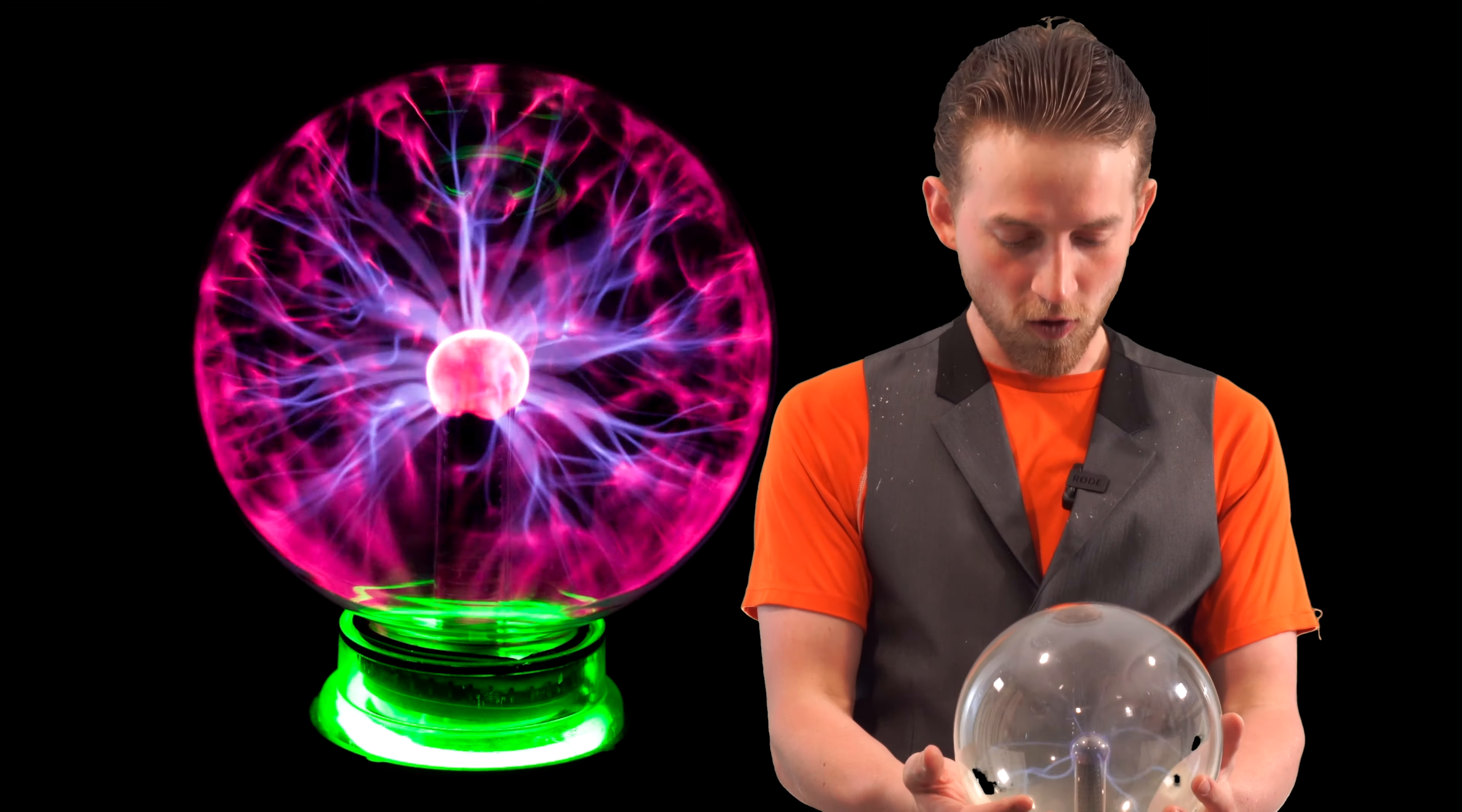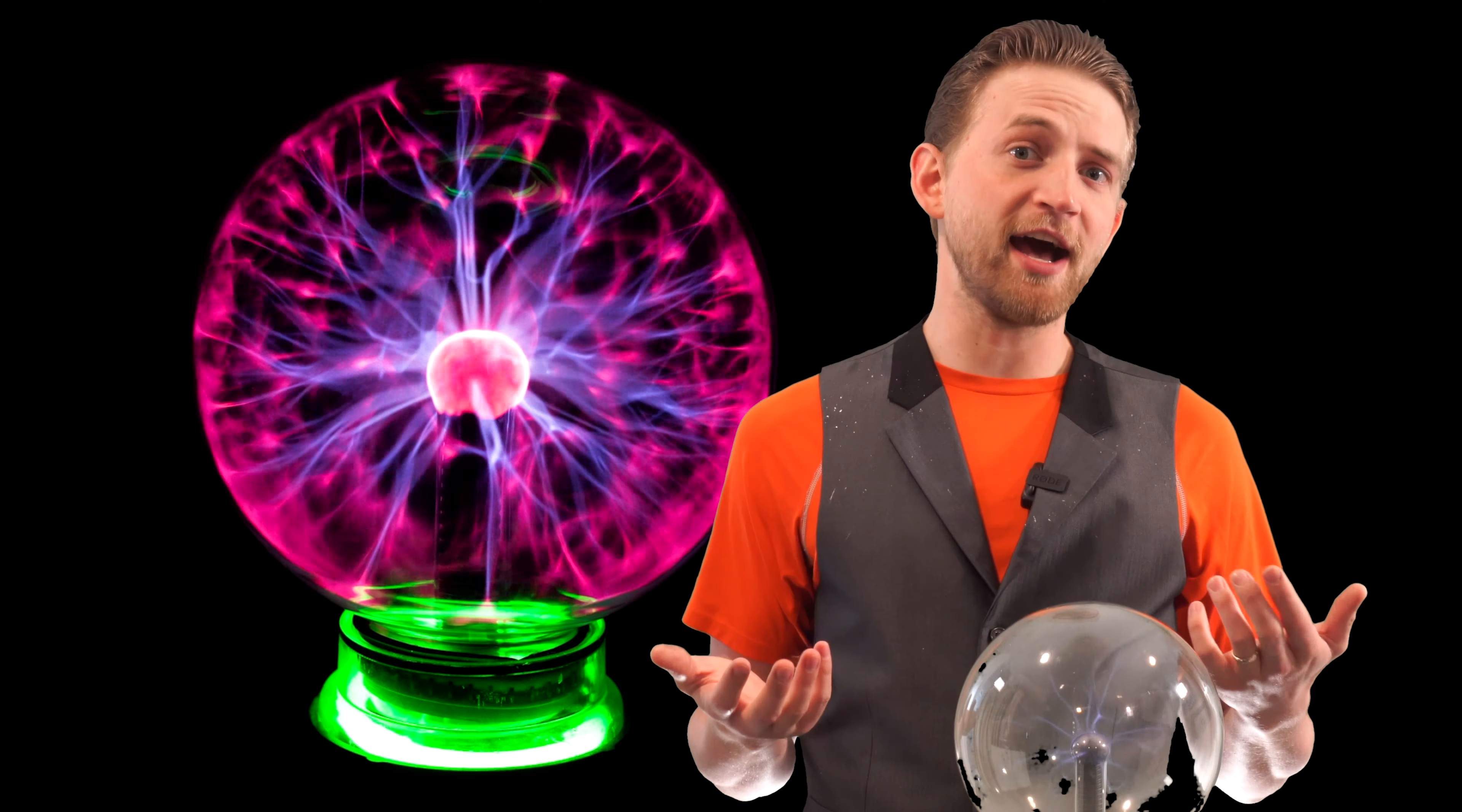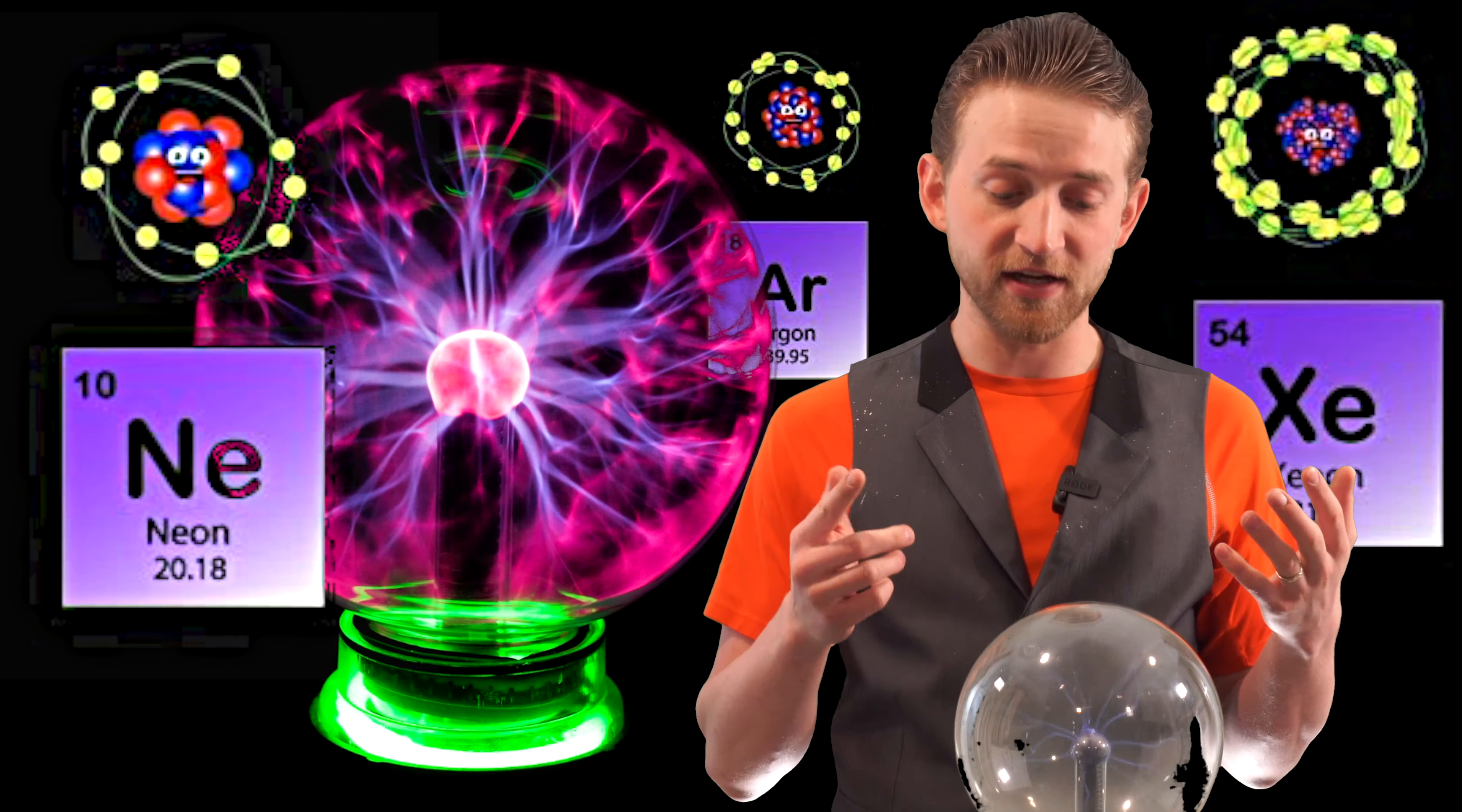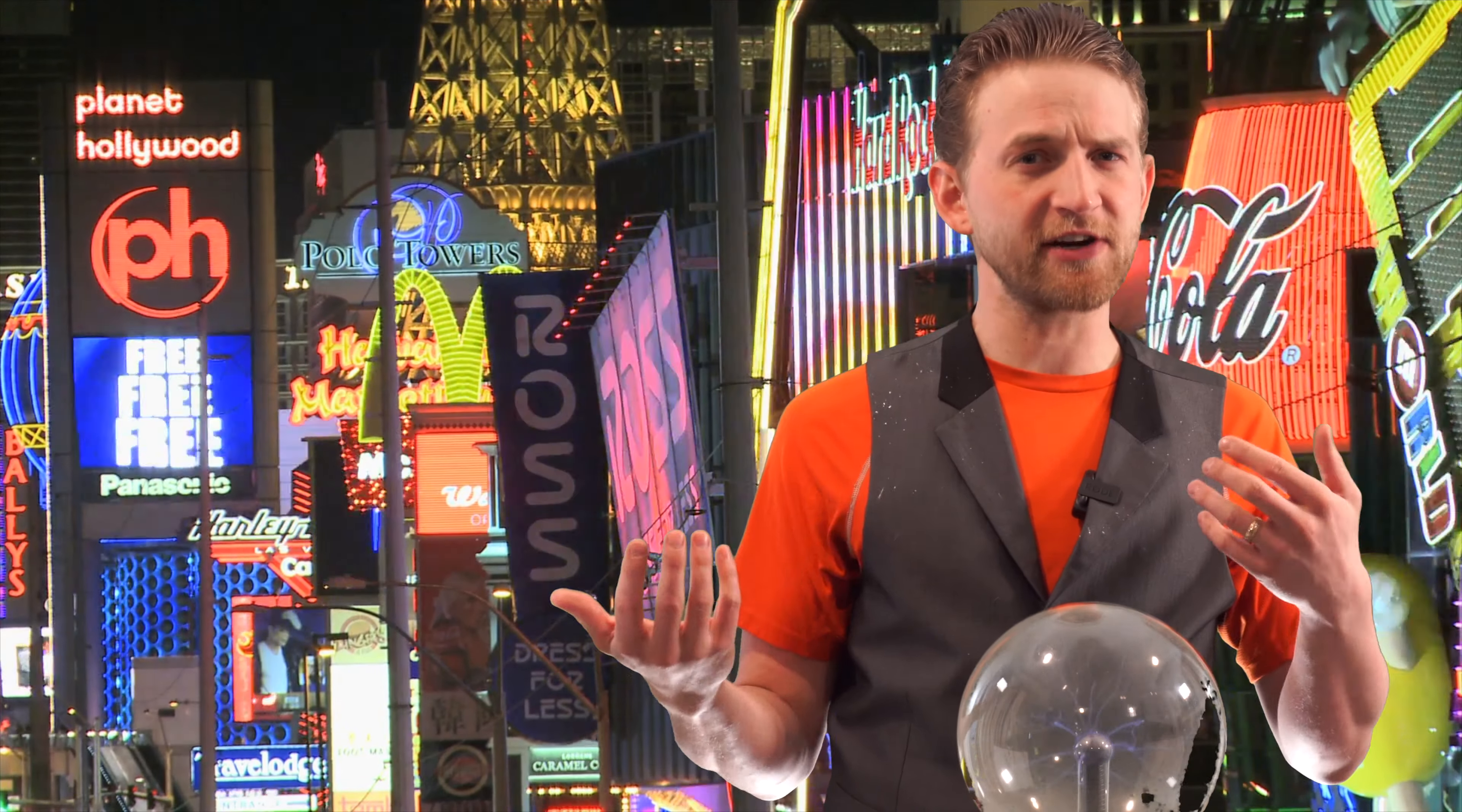So what is this exactly? This is a glass globe that has been depressurized. So it's at a low pressure, and the inside of it has been filled with a noble gas, which is just an inert gas, things like neon, xenon, and argon, and each one of those produces a different color when electricity flows through. That is why there's different colors in neon signs. It's just different gases that glow different colors.